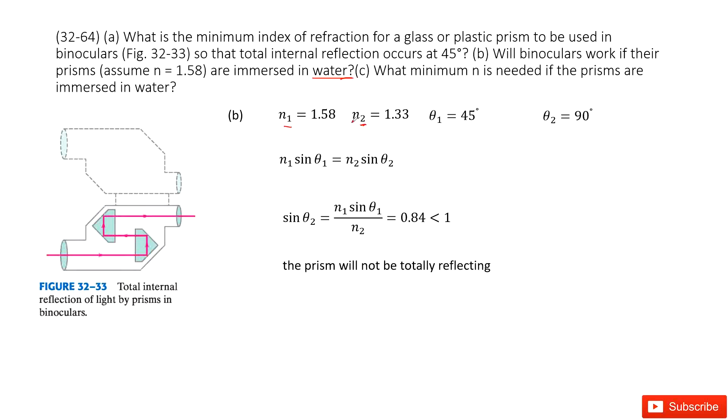In this case, n1 is given, n2 is given, theta 1 is given, theta 2 is given. The question asks: will total internal reflection occur? That means we write down Snell's equation and determine whether sin theta 2 equals 1, meaning theta 2 is 90 degrees.